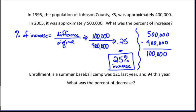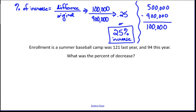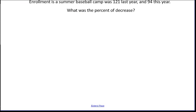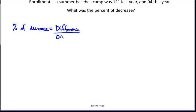Now the next problem is about a percent of decrease, but we will start the problem exactly the same way. The percent of decrease will be found by the difference over the original, the one that happened first in time.